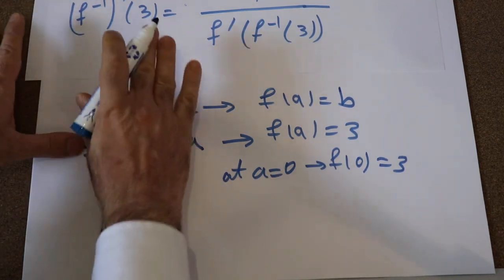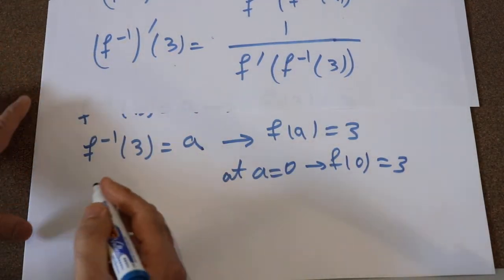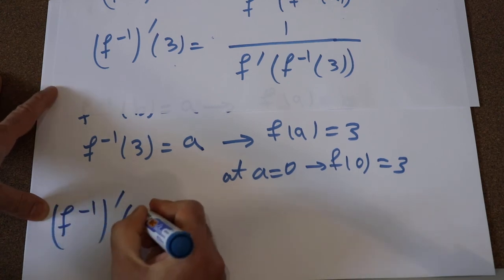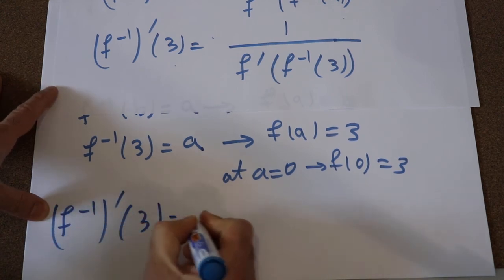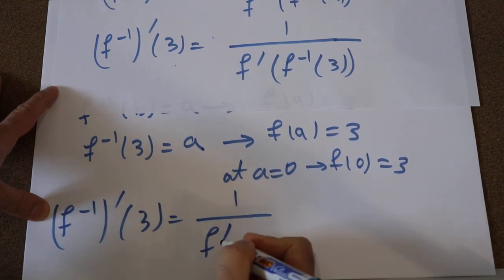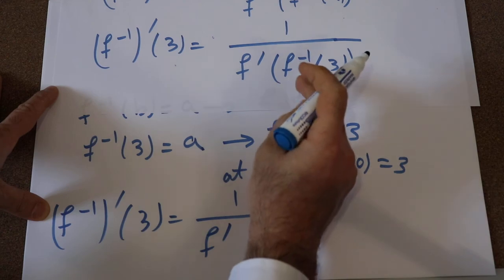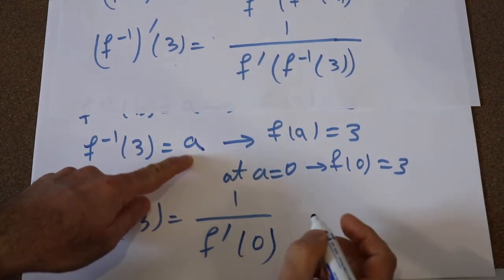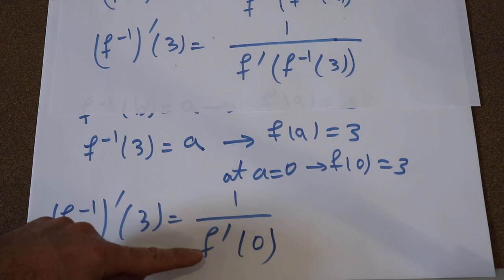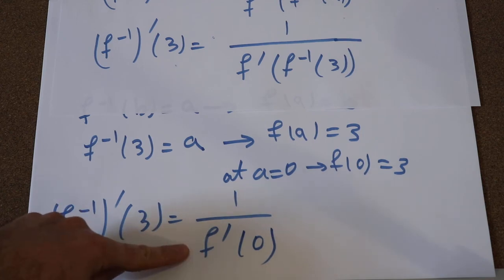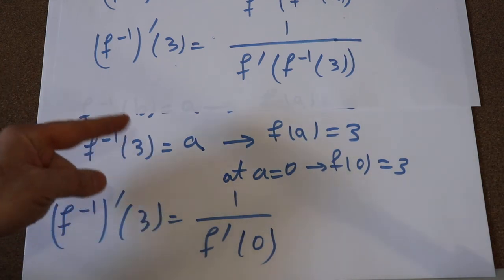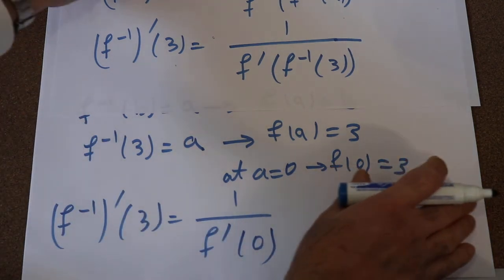Therefore, using this equation, you can write f⁻¹ prime(3) equals 1 divided by f prime of f⁻¹(3), which is equal to f prime(0). So all you need to do now is calculate the derivative of function f and then calculate the value of the derivative at point 0.